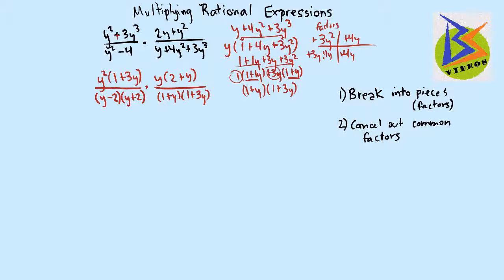Now that we have it all factored, now we can start looking at what we can cancel out. And so we look for common factors on the top and on the bottom, and we can cancel them out.